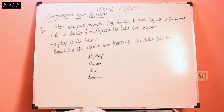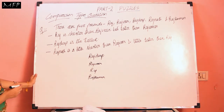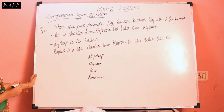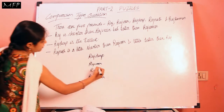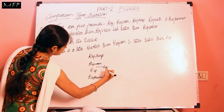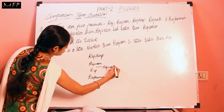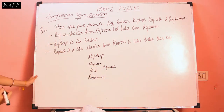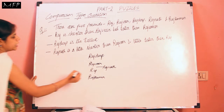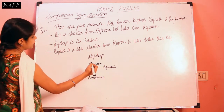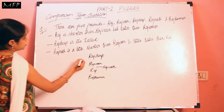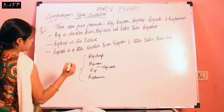Now the last statement is: Rajnath is a little shorter than Rajveer and a little taller than Raj. So it is given that Rajnath is a little shorter than Rajveer, meaning Rajnath's height is less than Rajveer's height. And since Rajnath is a little taller than Raj, Rajnath will come below Rajveer and above Raj. So this is the arrangement.